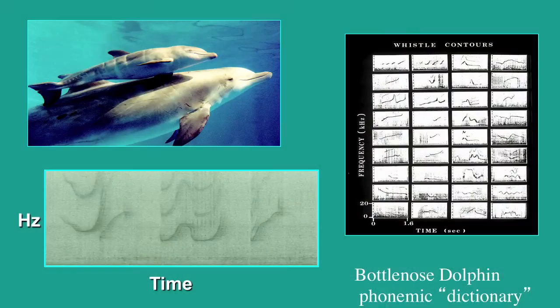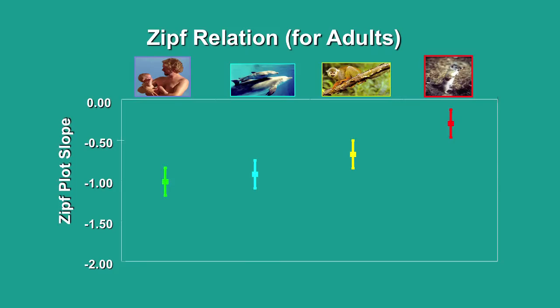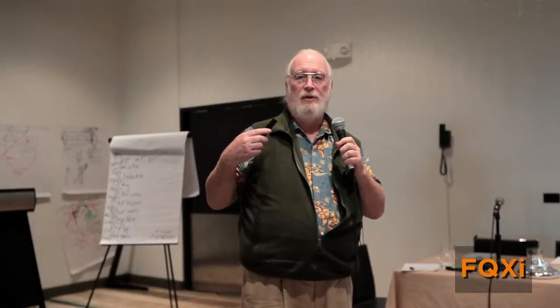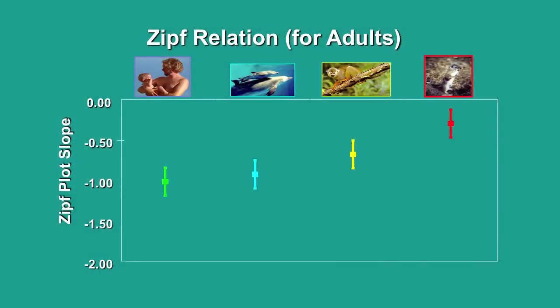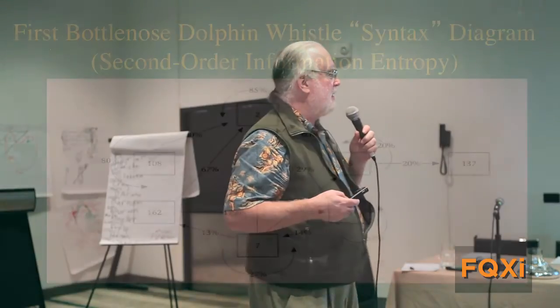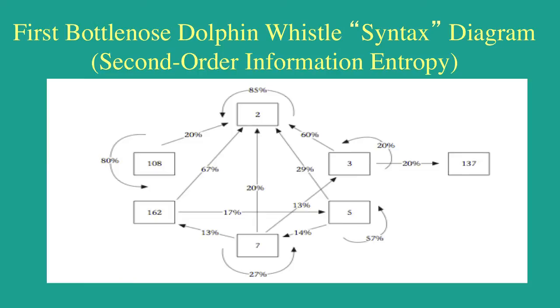What we did was compile a dictionary of bottlenose dolphins' whistle communication system and plotted their frequency of occurrence. We got minus-one for humans and minus-one slope for dolphins, which was interesting. That means they have the potential — it's a necessary but not sufficient condition to have a minus-one slope. It didn't work for squirrel monkeys very well, and ground squirrels didn't obey Zipf's law at all. We then applied complexity analysis — conditional probabilities between signals — and produced what we think is the first dolphin syntax diagram.